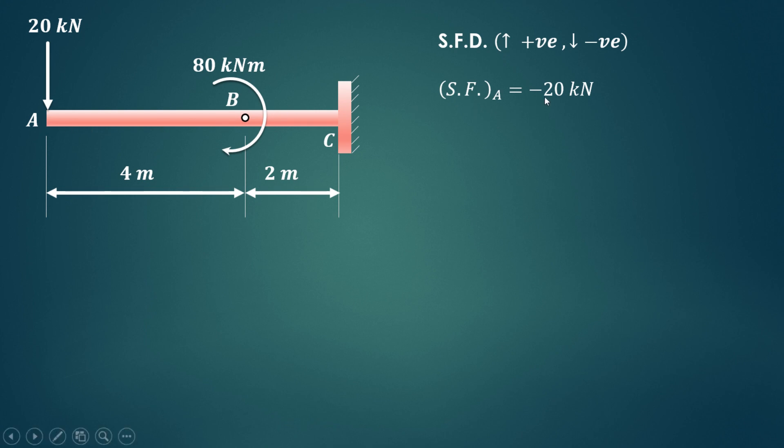Shear force at A will be equal to minus 20 kN because 20 kN force is acting in the downward direction. Shear force at B will be same as that of A because between A and B there is no other force acting. Similarly shear force at C is also the same because between B and C there is no other point load or UDL acting.